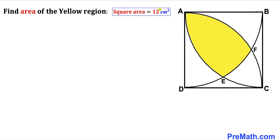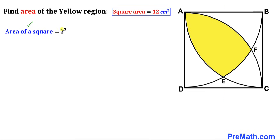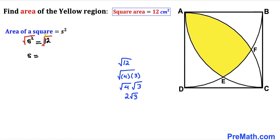Let's focus on square ABCD whose area is 12, and calculate the side lengths. Recalling the area of a square formula, area equals s squared, we have s squared equals 12. Taking a square root on both sides, s equals the square root of 12, which simplifies to 2 times the square root of 3. So the side length turns out to be 2√3 centimeters.